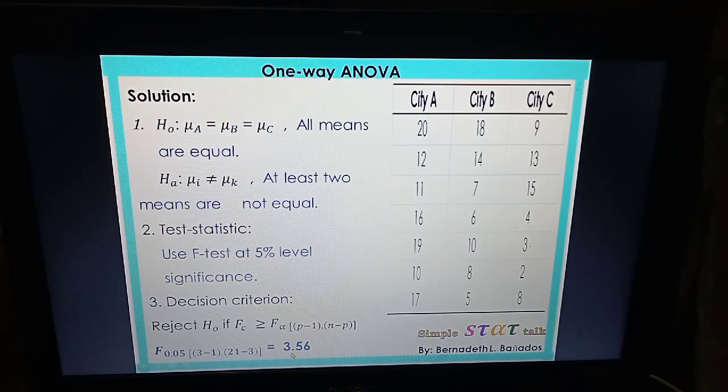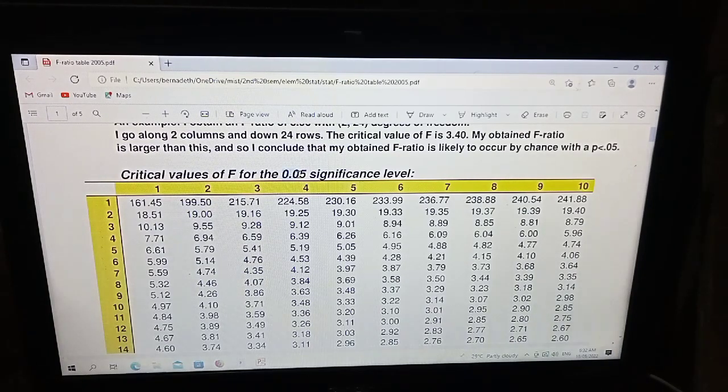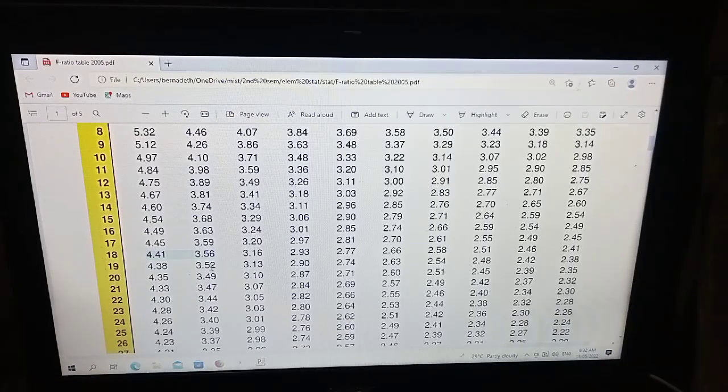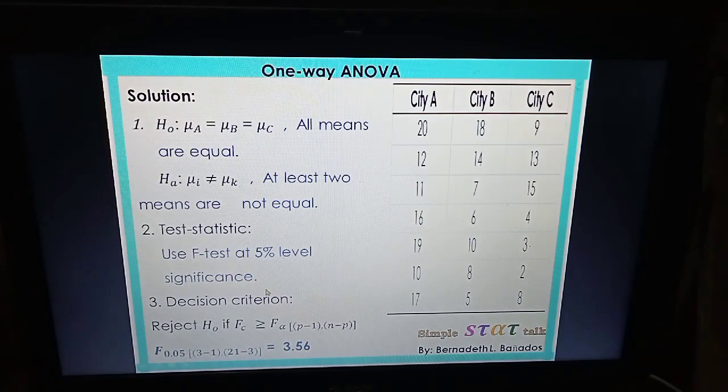How did I obtain 3.56? I look at the F-table using this information: the 0.05 level of significance and degrees of freedom. If 3 minus 1 is 2, and 21 minus 3 is 18, we look for that in the F-table. Be sure it's for 5% level of significance. Find the intersection of 2 and 18. That is 3.56. We'll compare to that.